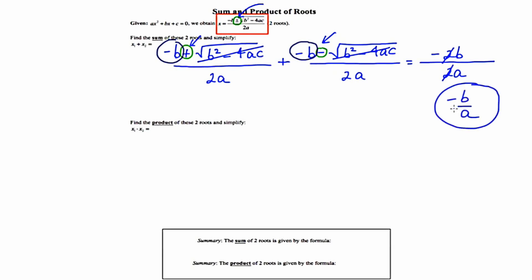This is the formula for sum of two roots, negative b over a. And let's write that down here in the little summary. The sum of two roots is given by the formula negative b over a.